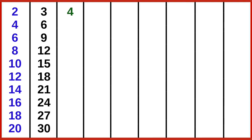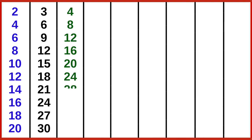4 ones are 4, 4 twos are 8, 4 threes are 12, 4 fours are 16, 4 fives are 20, 4 sixes are 24, 4 sevens are 28, 4 eights are 32, 4 nines are 36, 4 tens are 40.